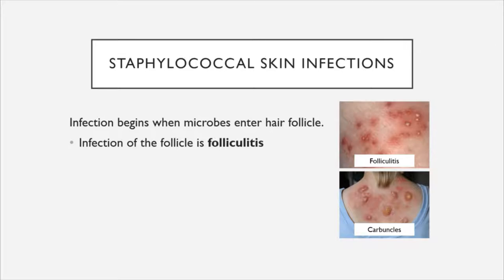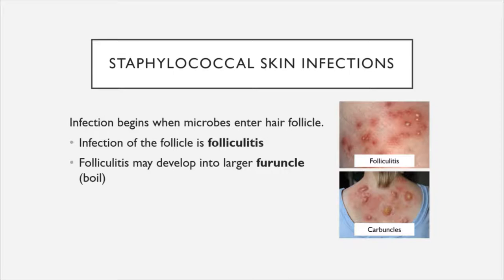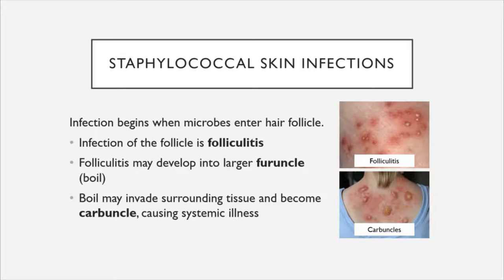People most at risk of acquiring initial-stage infections include those who play contact sports, share athletic equipment, live in community settings, or have weakened immune systems. The best way to prevent folliculitis is to practice good hygiene and prevent skin irritation. Most cases of folliculitis are mild, but it can develop into a furuncle or boil, where infected follicles spread and invade surrounding tissue. These boils can further develop into a carbuncle, which can lead to systemic illness with fever, inflammation, pain, weakness, and malaise—a very serious stage requiring medical attention.